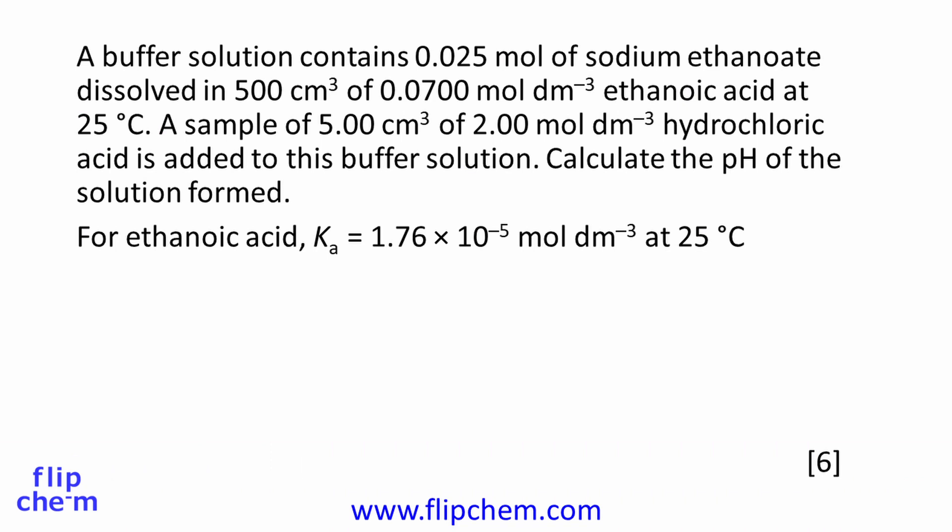Here's the question. A buffer solution contains 0.025 mole of sodium ethanoate dissolved in 500 centimetres cubed of 0.0700 mole per decimetre cubed ethanoic acid at 25 degrees Celsius. A sample of 5.00 centimetres cubed of 2.00 mole per decimetre cubed hydrochloric acid is added to this buffer solution. Calculate the pH of the solution formed and we're given the Ka value for ethanoic acid.